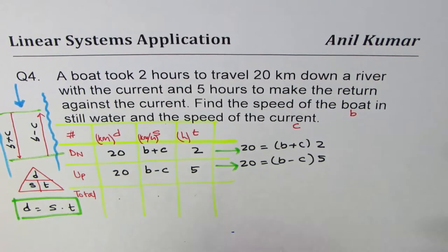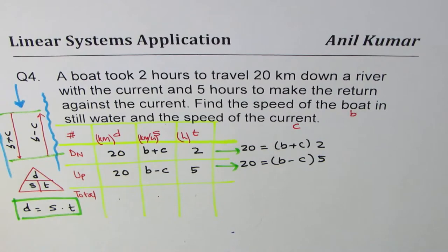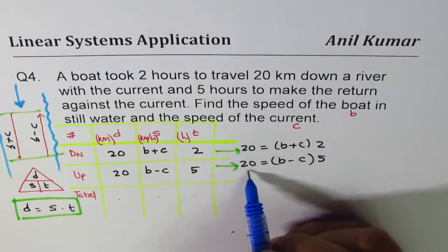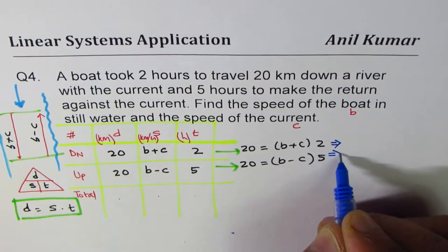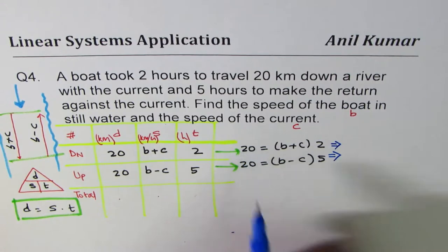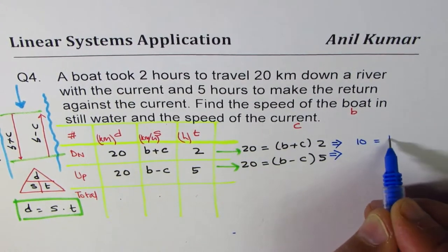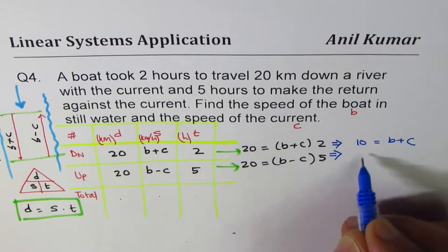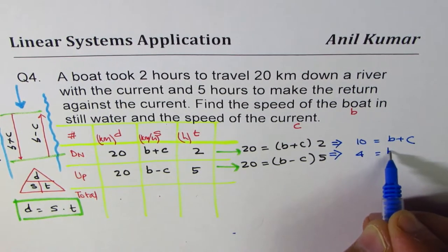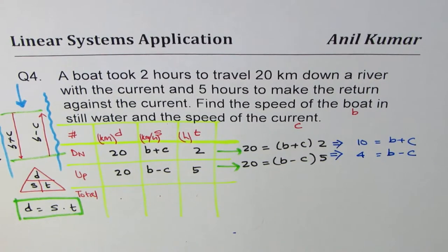Now if possible, we should solve these equations or rather simplify first. So 20 and 20, they can be divided by 2 and 5. So I prefer to simplify them at this stage. If I divide by 2, I get 10 equals to B plus C.